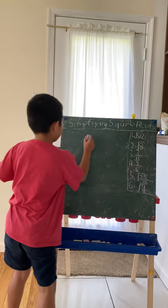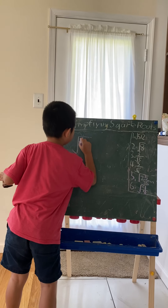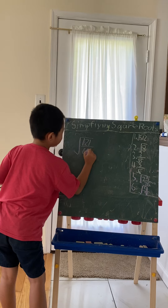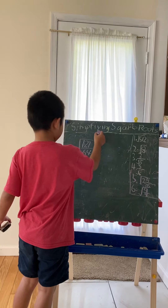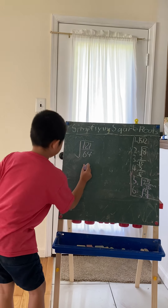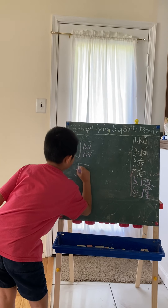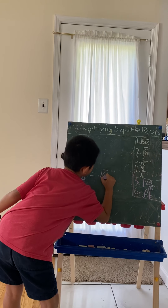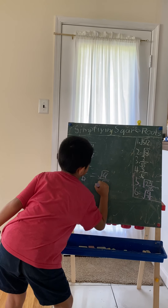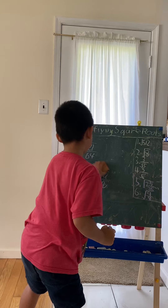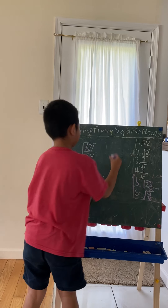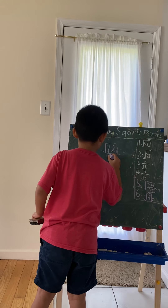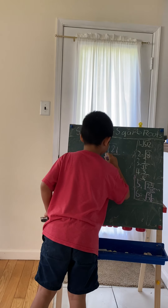Sometimes you may get the square root of 121 over 64. What could that be? We have another basic rule: the square root of A over B equals the square root of A over the square root of B. That rule can help us here — we can rewrite it as the square root of 121 divided by the square root of 64.